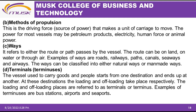Ways refers to the route or path by which the vessel passes. The route can be on land, on water, or through air — examples include roads, railways, canals, and seaways. Terminals are where the units of carriage stop at a destination — these include bus stations, airports, seaports, and ports.